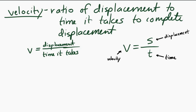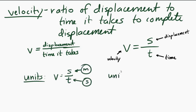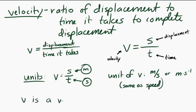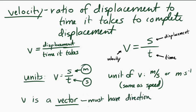If we think about the units of velocity, the unit of displacement is meters and the unit of time is seconds, so the unit of velocity would be meters per second. Speed and velocity have the same units. However, velocity is a vector — that's another big difference between speed and velocity. Velocity is a vector, so it must have direction.